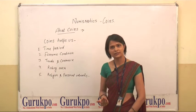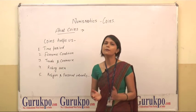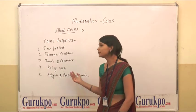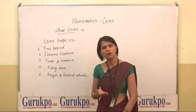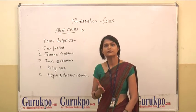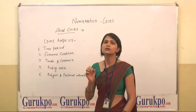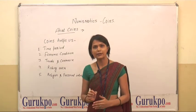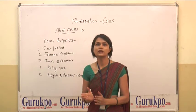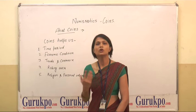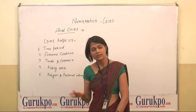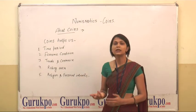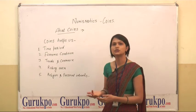Last, religion and personal interest. With the help of coins we come to know about the religion and personal interest of rulers, because these types of information are generally marked on the coins. For example, Kanishka's coin shows his personal interest in Buddhist religion. Samudragupta's coin shows his personal interest in hunting and music.